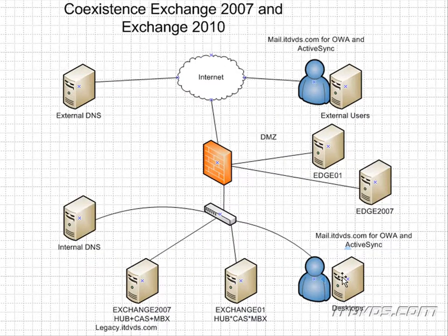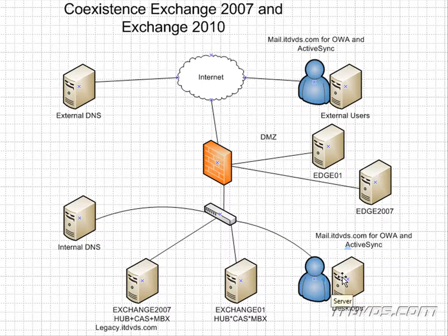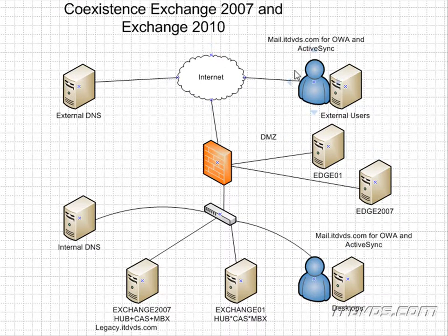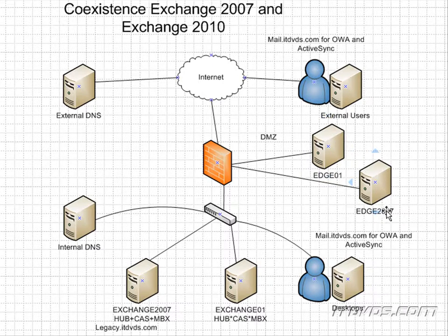During our upgrade to Exchange 2010, we're most likely going to have a period of time where Exchange 2007 and Exchange 2010 are coexisting, meaning they're both up and running in our organization. And this is how it will look. The external part is the same, but in the DMZ we'll have Edge 01, which will be our Exchange 2010 Edge Transport Server, and then Edge 2007, which was our existing Edge Transport Server.